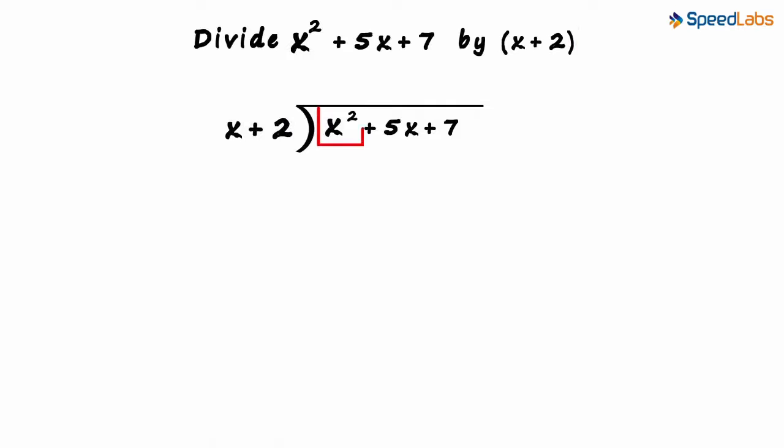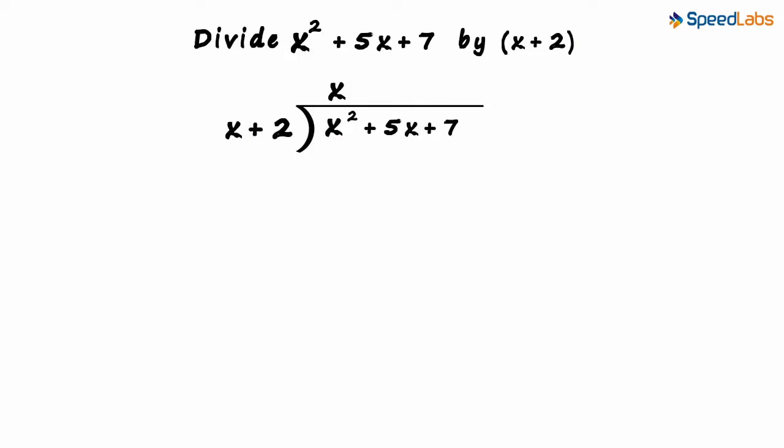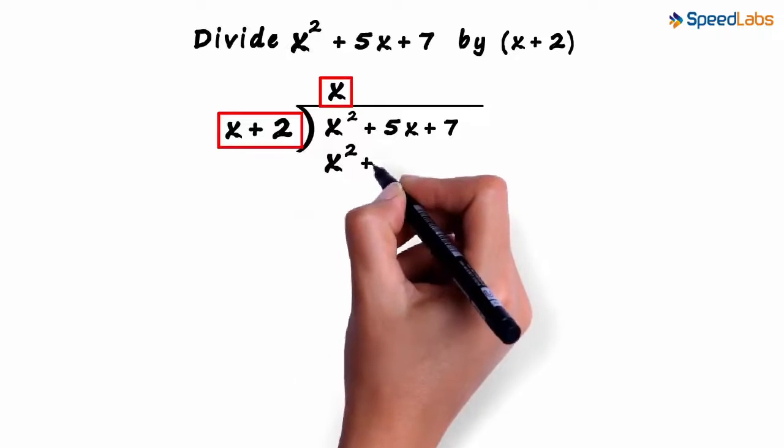We divide the first term of the dividend by the first term of the divisor to get x as the first term of the quotient. In the next step, we multiply x with x plus 2 and write x squared plus 2x here.